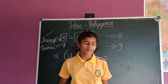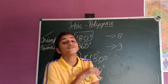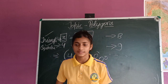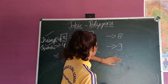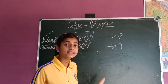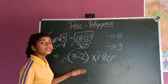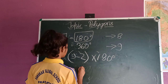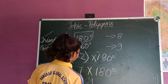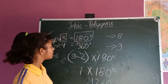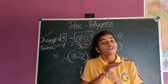What about bigger shapes like a nonagon or octagon? As I told you, by applying this formula we can find the sum of angles of any polygon. Let's take a nonagon, which has 9 sides: 9 minus 2 into 180 degrees. That gives us 7 into 180 degrees, which equals 1260 degrees. This is how we find the sum of all the angles of any polygon.